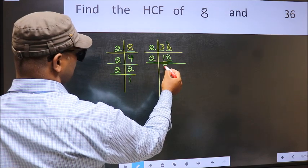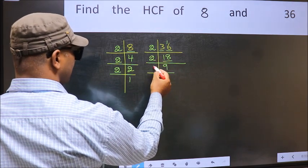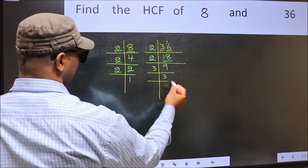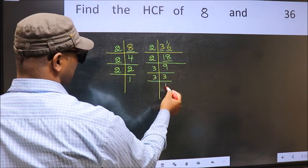Now 18 is 2 nines, 18. 9 is 3 threes, 9. 3 is a prime number so 3 ones, 3.